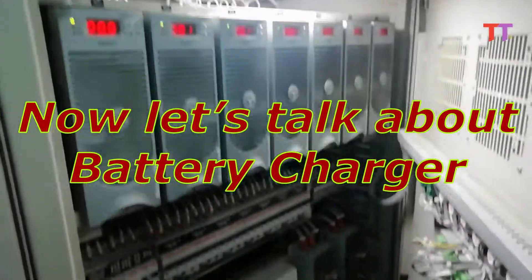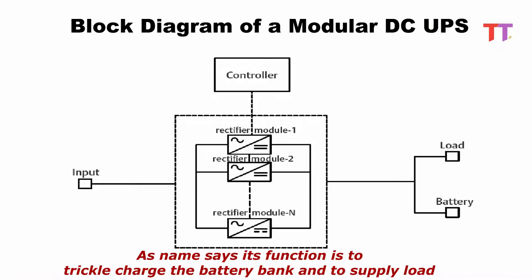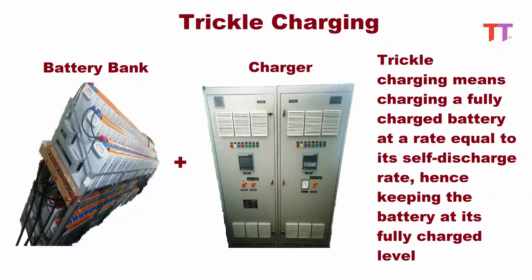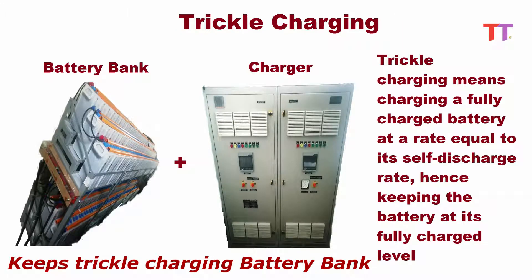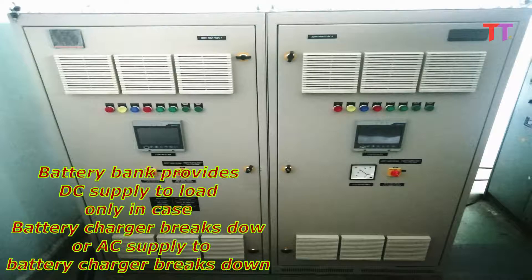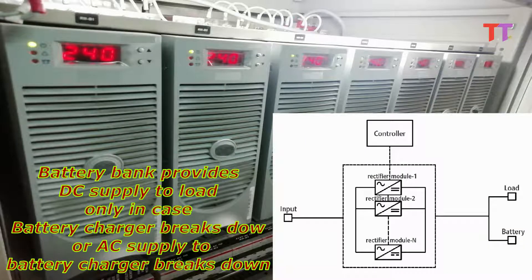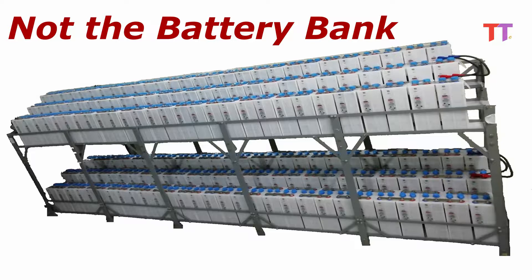Now let's talk about battery charger. Battery charger is nothing but an AC to DC converter, and as the name says, its function is to trickle charge the battery bank and to supply DC power to the load. Trickle charging means charging a fully charged battery at a rate equal to its self-discharge rate, hence keeping the battery at its fully charged level. In normal condition, the charger provides DC supply to the load and keeps trickle charging the battery bank. Battery bank provides DC supply to the load only in case the battery charger breaks down or AC supply to the battery charger fails. So in normal condition, it is the charger which supplies DC power to protection, communication, control, and measurement devices in the electrical substation — not the battery bank.